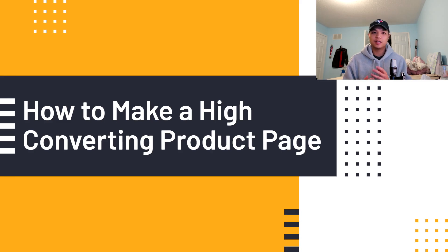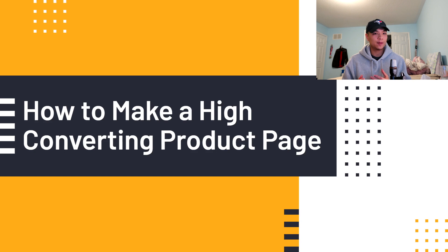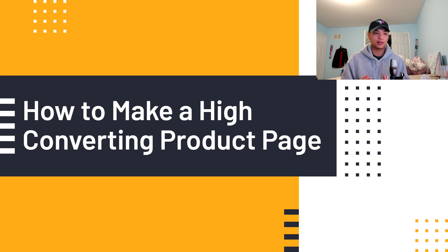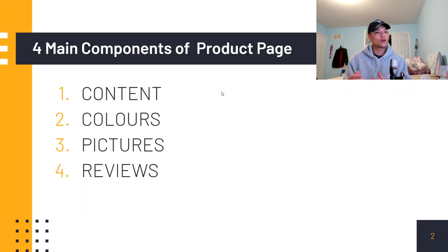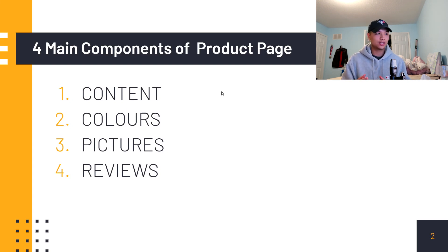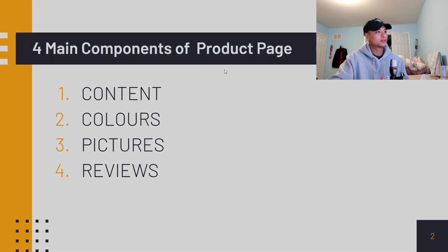In today's video I'm going to be talking about what makes a good product page, as well as showing a product page that I've created and breaking down the different components of it. The four main components of the product page are going to be content, colors, pictures, and reviews.